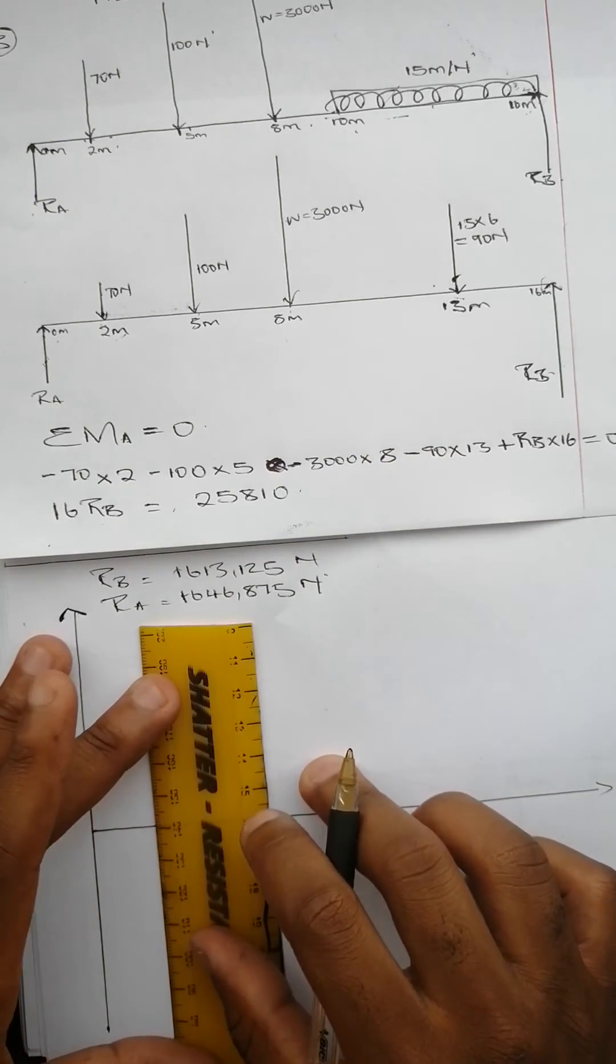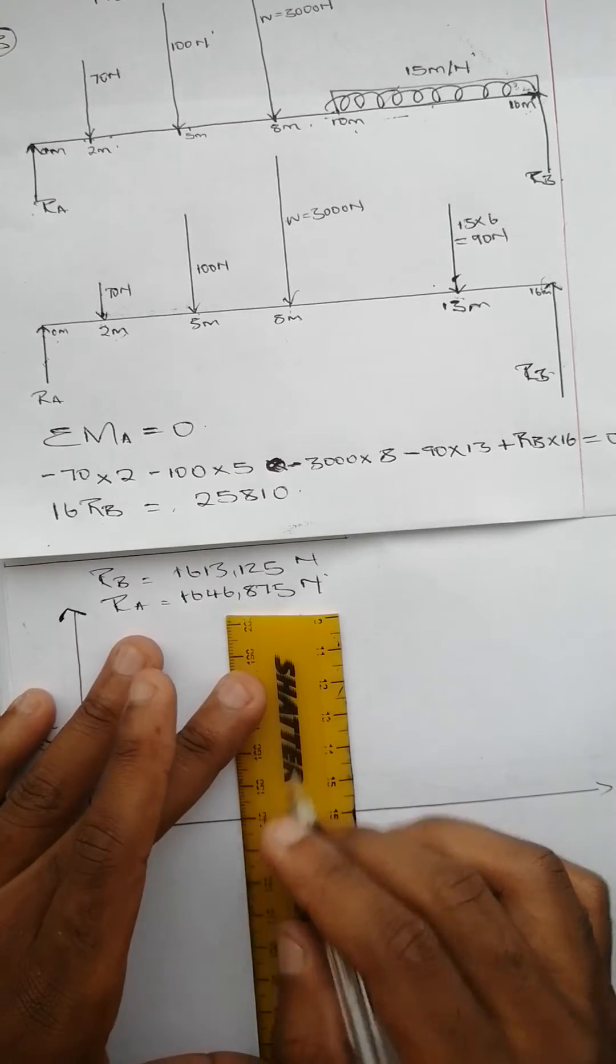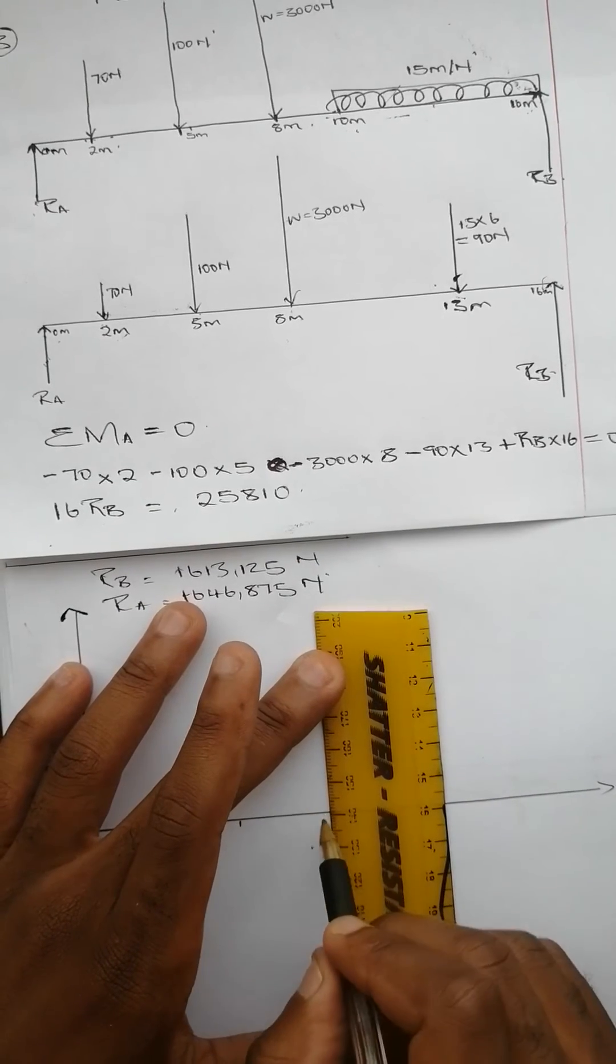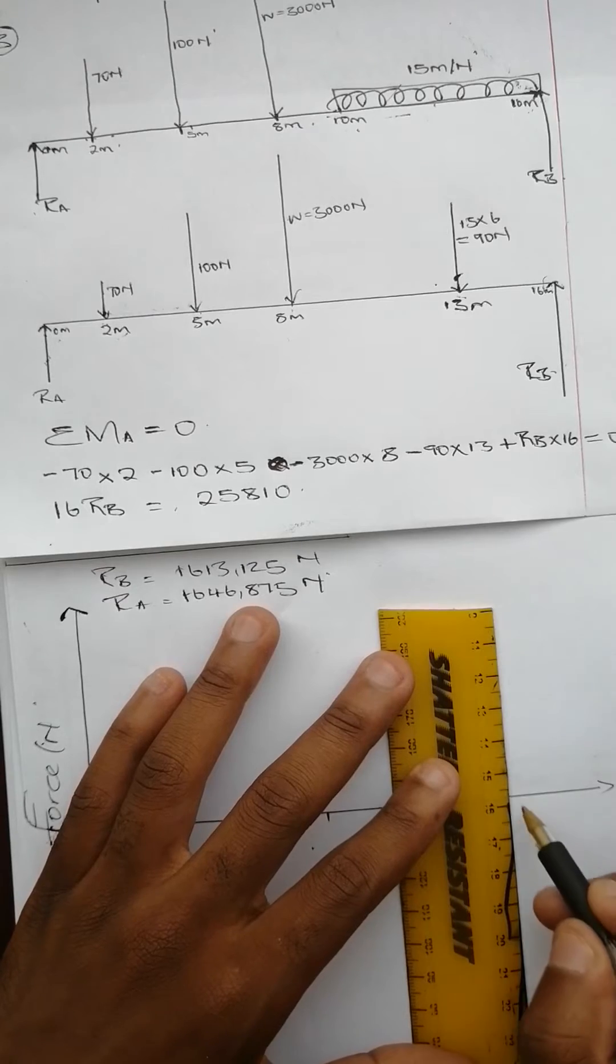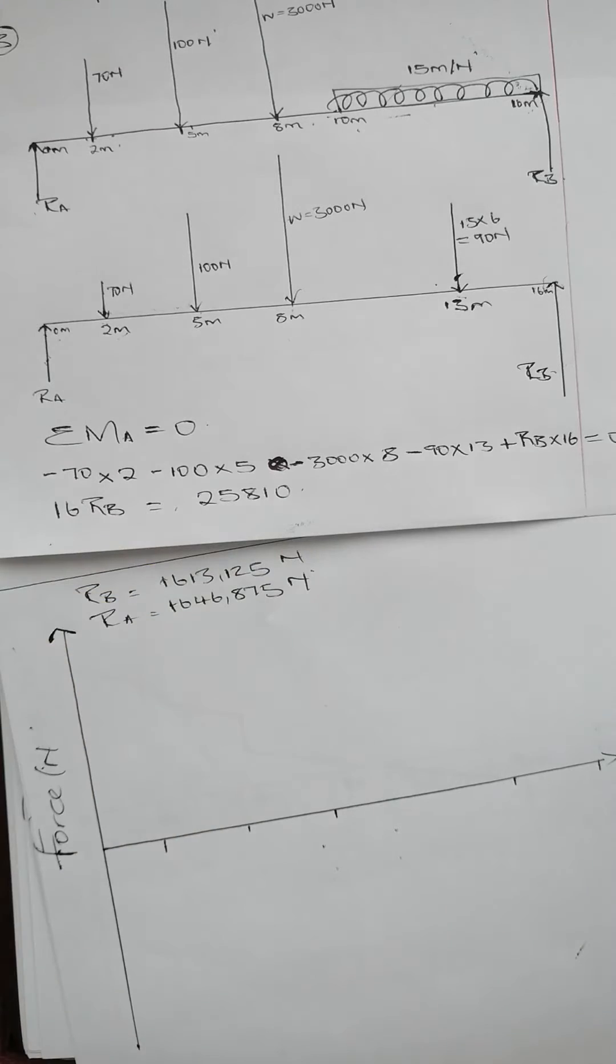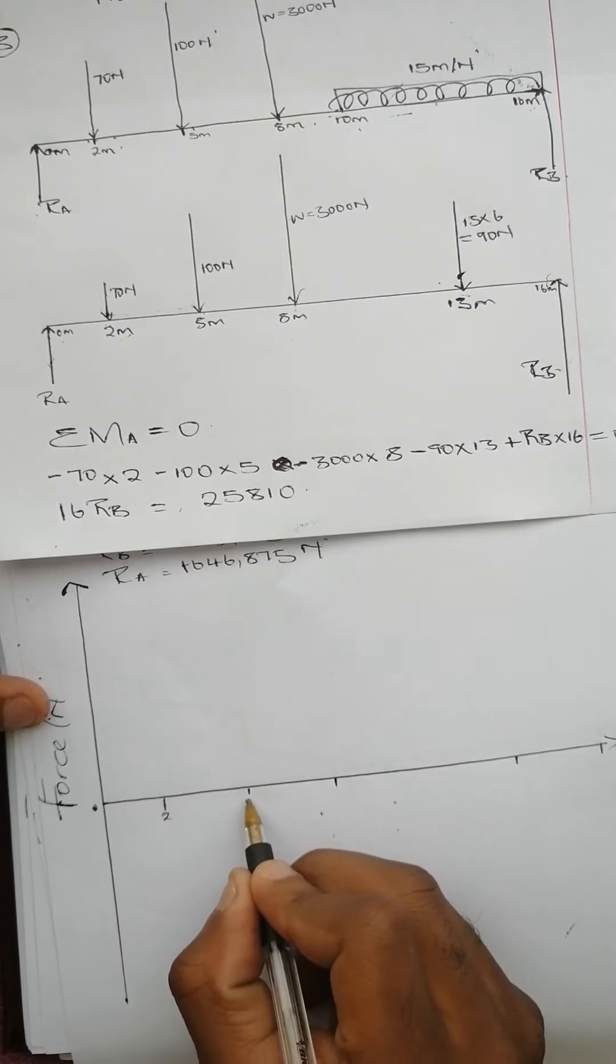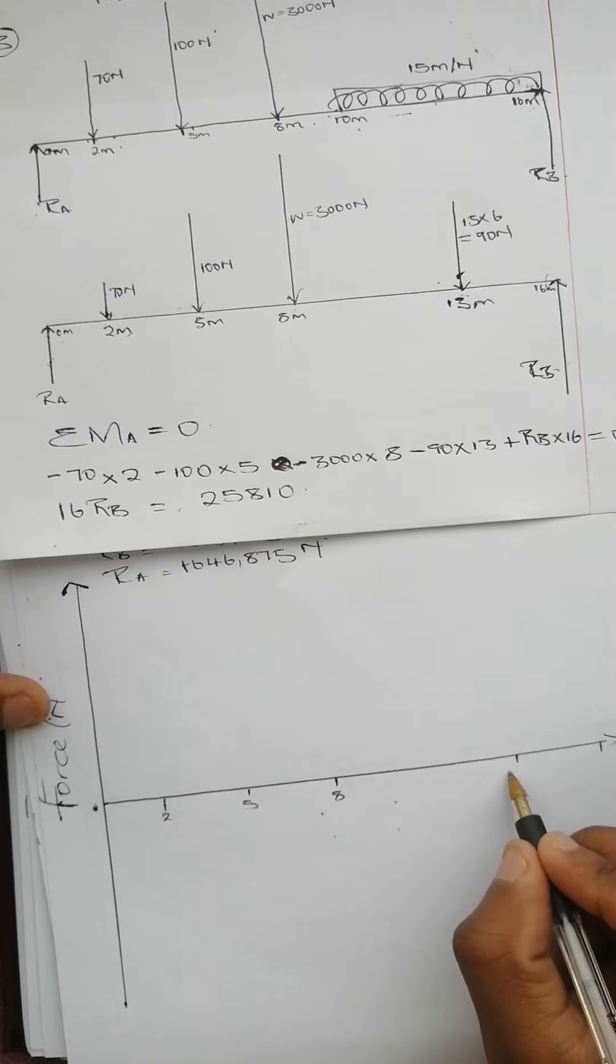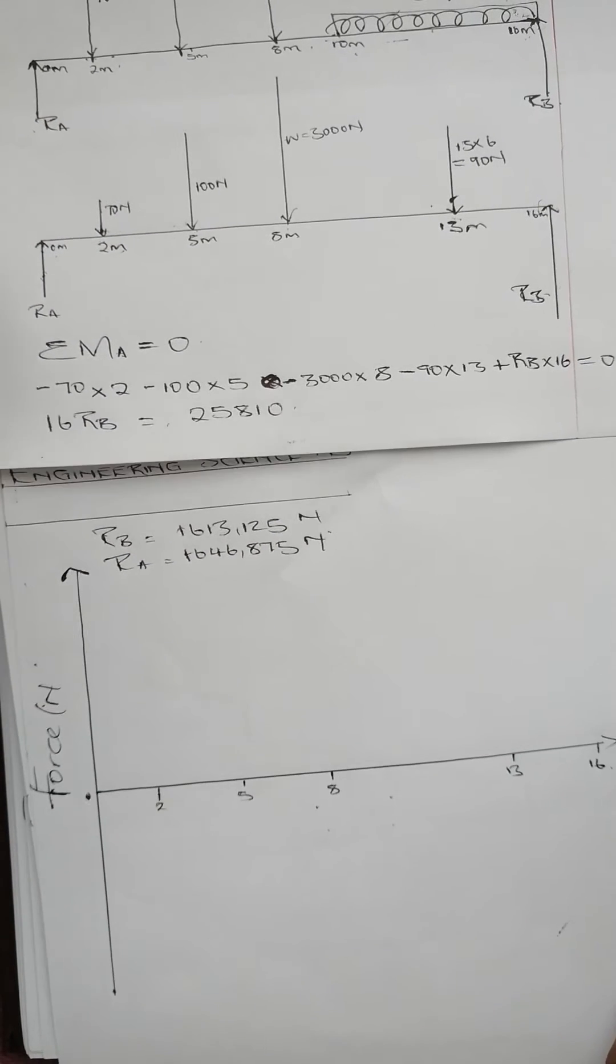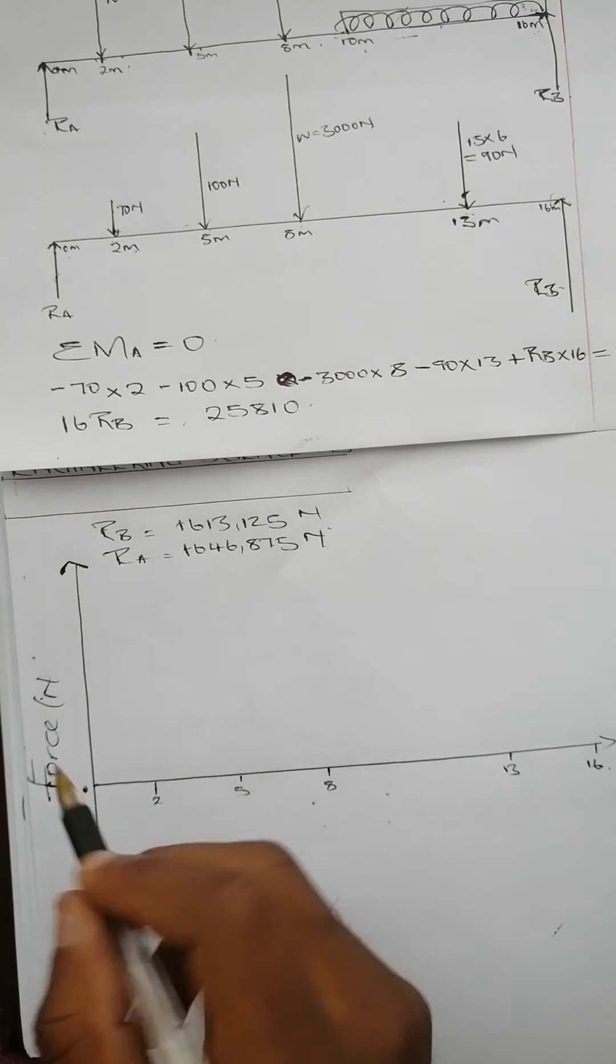We're going to have 2 meters here, 5 meters along there, 8 meters here, 13 and 16. So it's going to be 0, 2, 5, 8, 13, and 16.